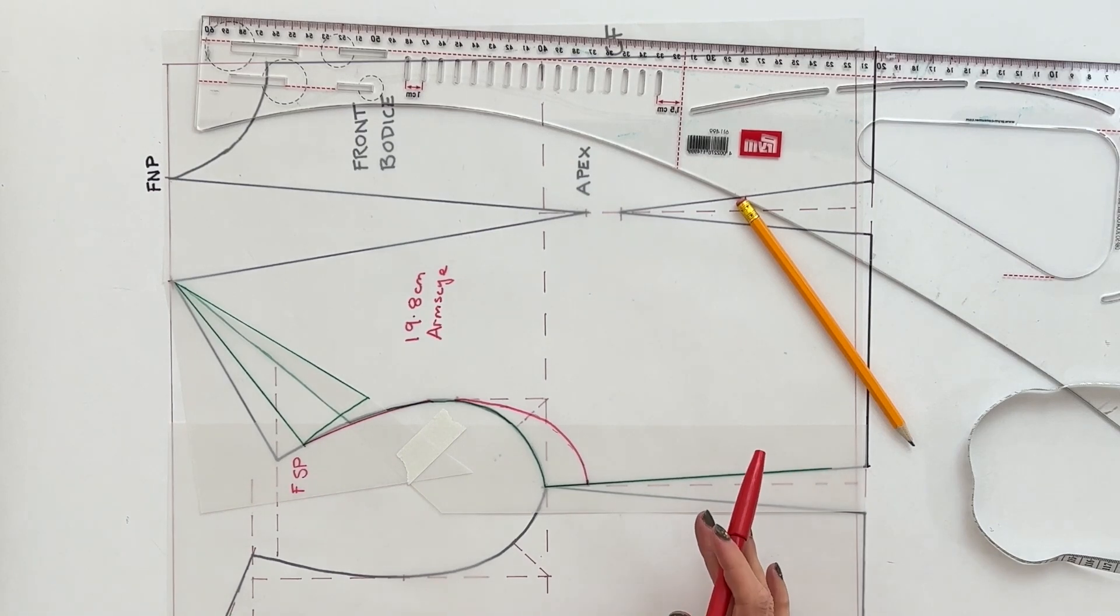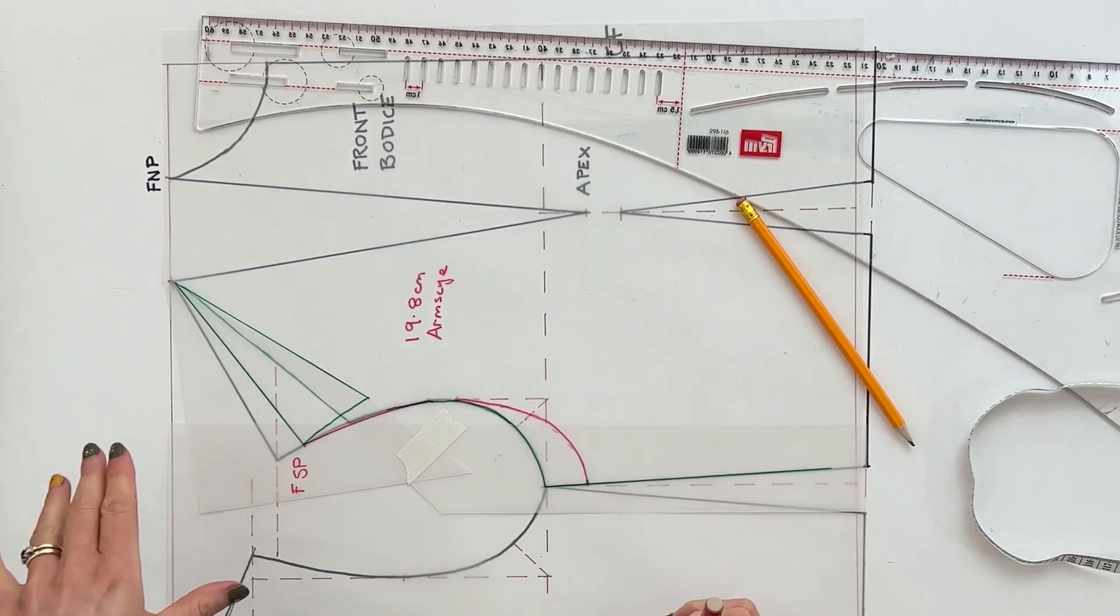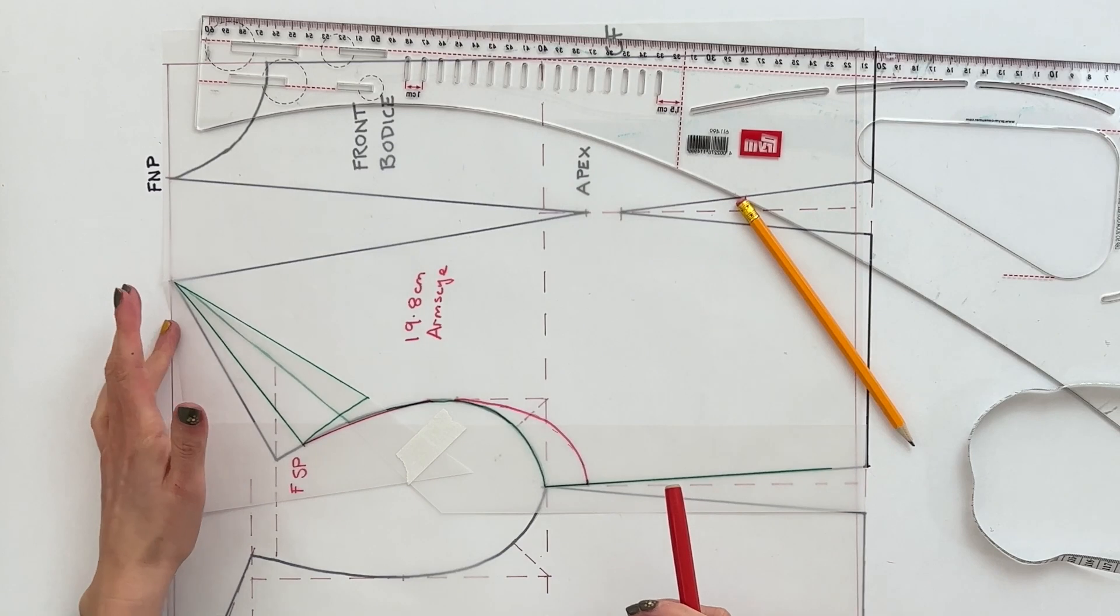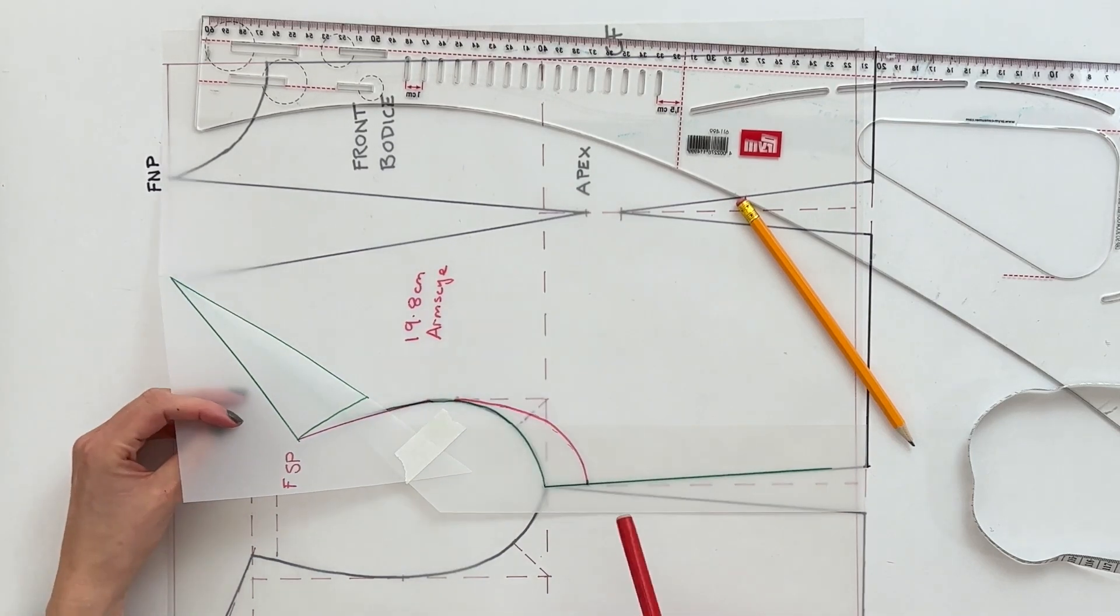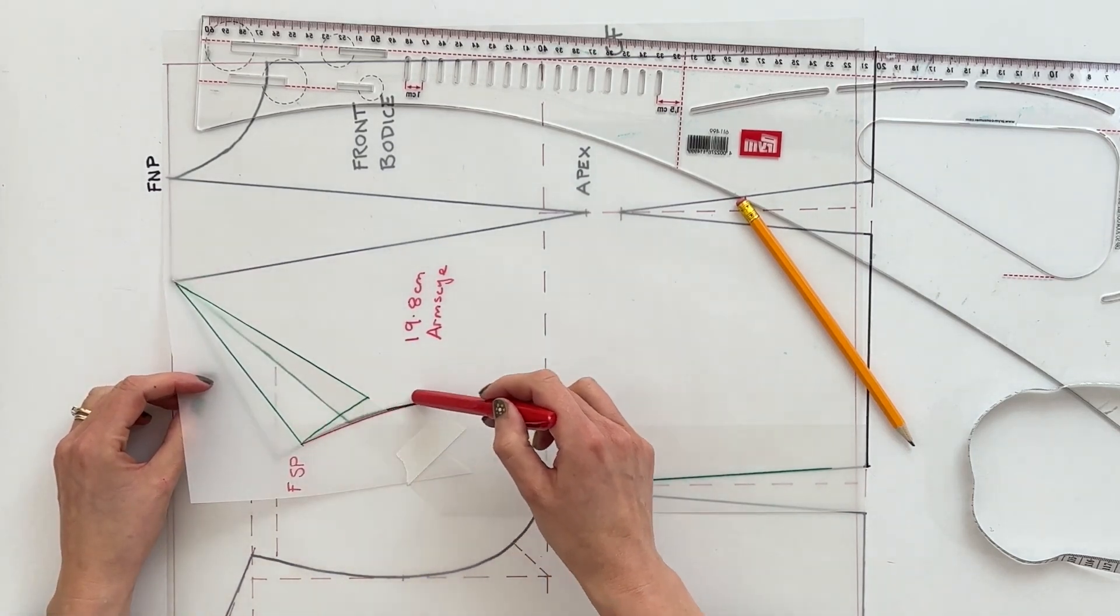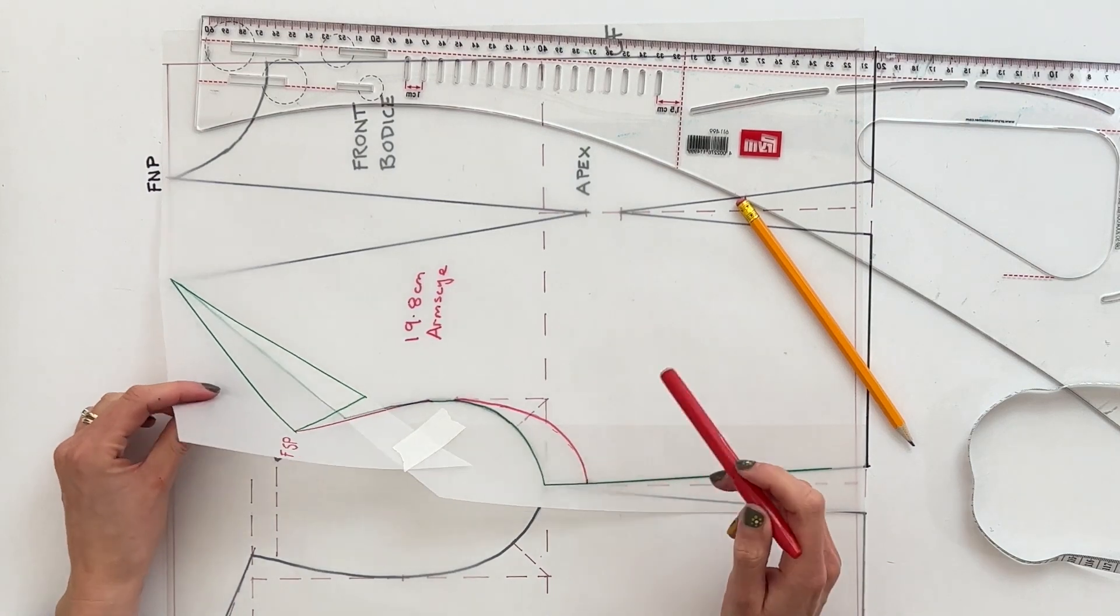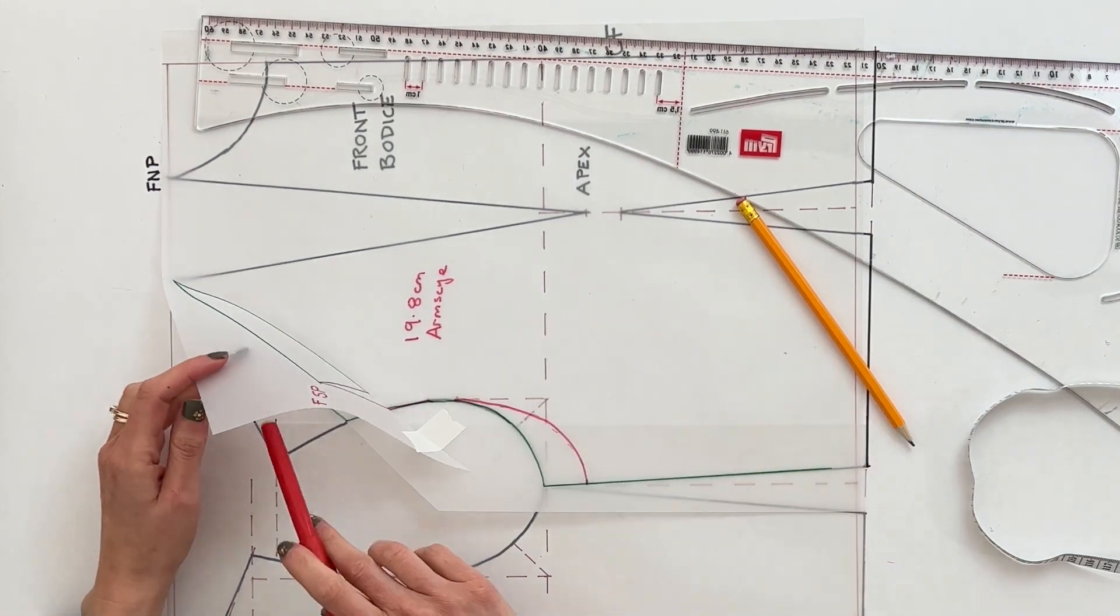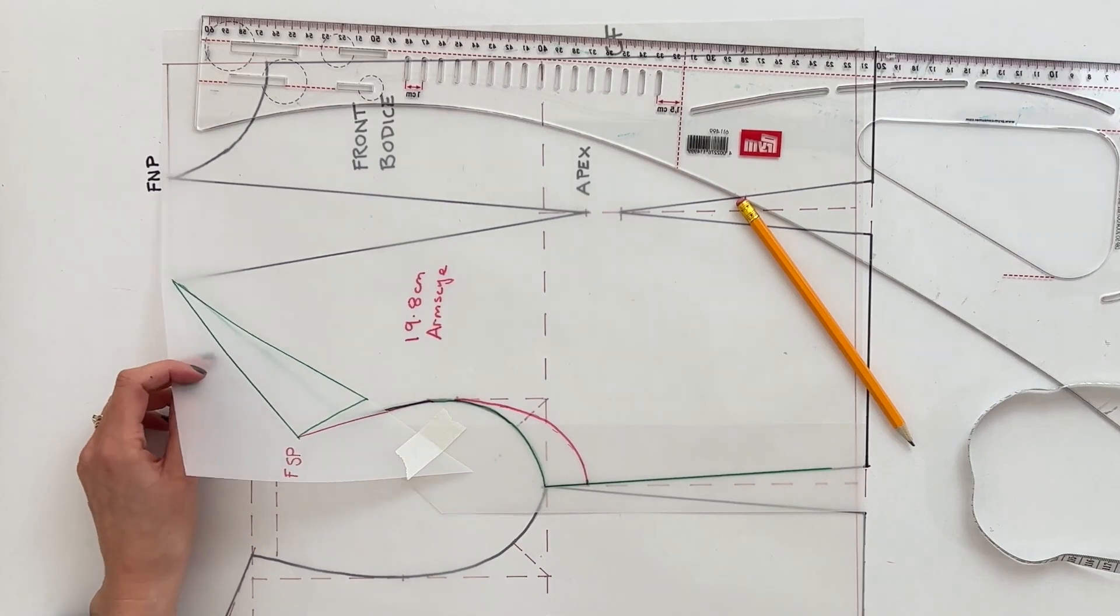Okay so then you can either freehand or use your pattern drafting tool just to mark that in. So everything's all dropped. Now at that point what you now need to do is just to cut out the tracing paper you've got here. Cut along that line and around your new line and then pop those changes onto your original body block.